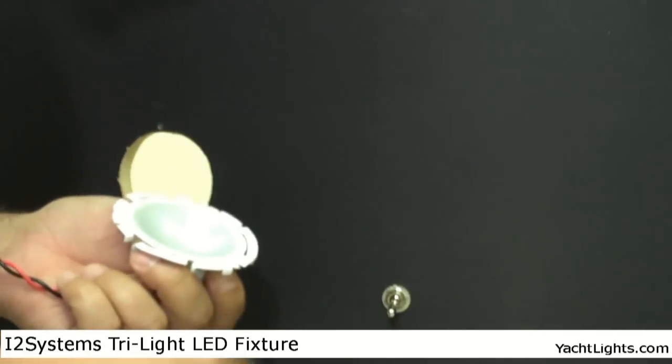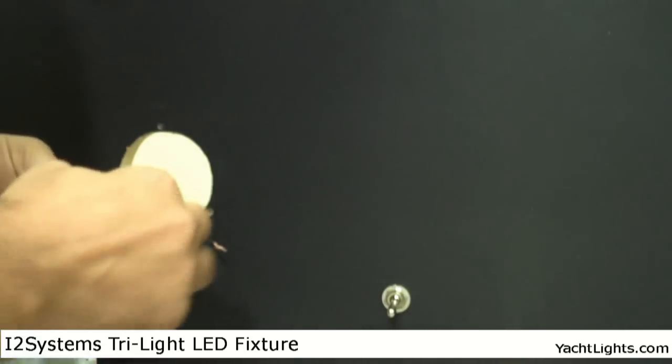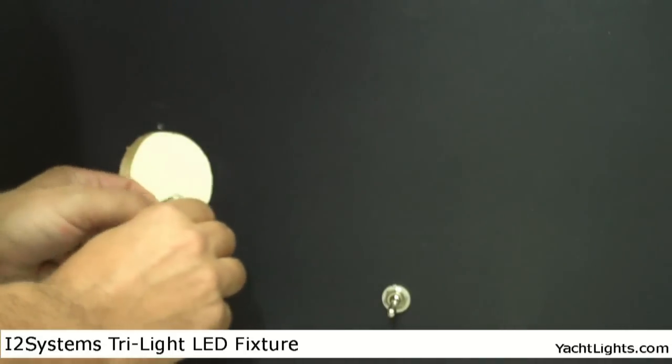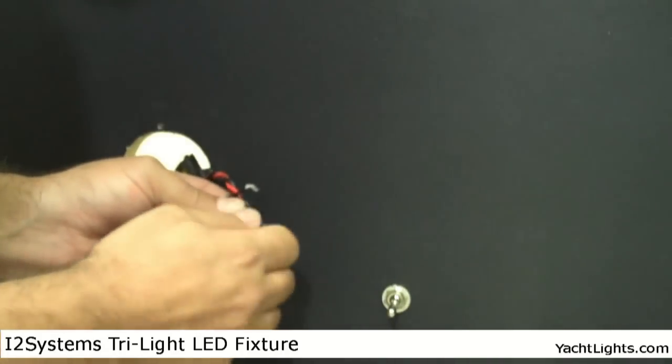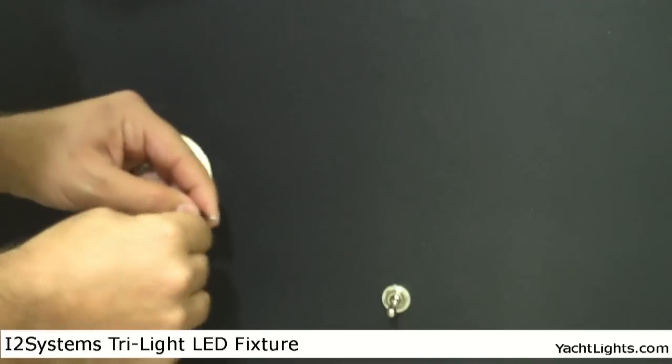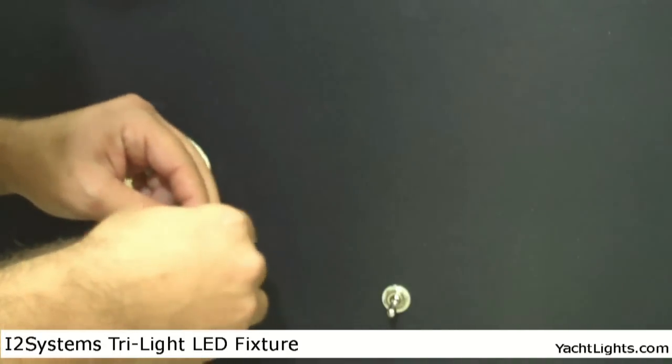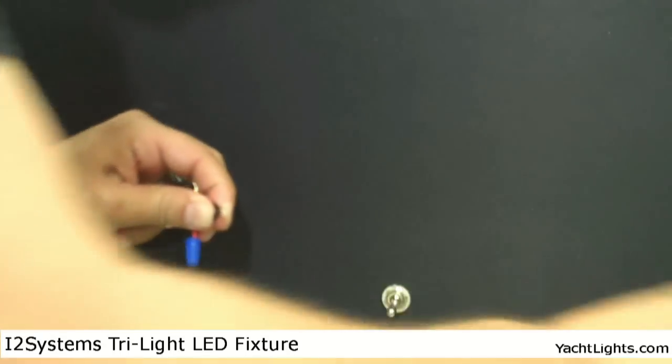First thing you have to do is put it in place and you're going to make your wire connections. So you're going to connect the red to positive, black goes to ground, and this fixture will work with either 12 volt or 24 volt.